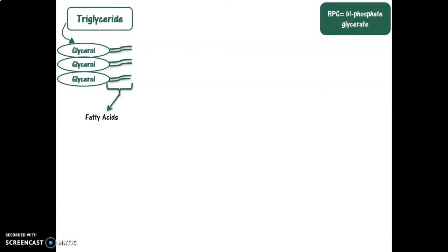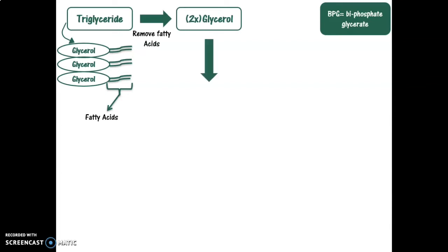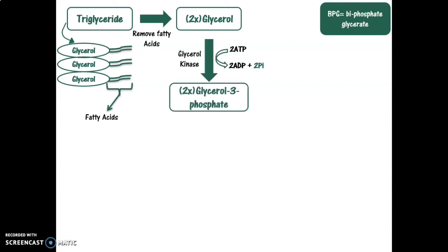These two glycerol molecules will be converted into glycerol-3-phosphate by the enzyme glycerol kinase. From the name kinase, we will add a phosphate group. Because this phosphate group is added on carbon number 3 of a glycerol molecule, the obtained compound is named glycerol-3-phosphate. In this step, we use 2 ATP molecules, forming 2 ADP and 2 inorganic phosphate groups.